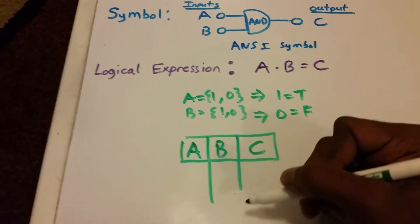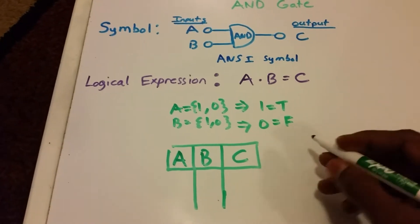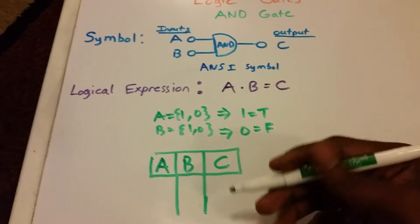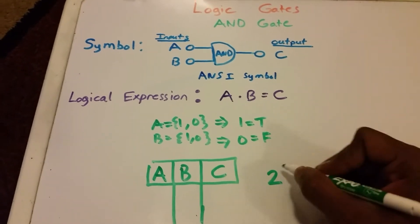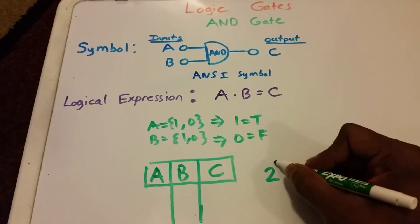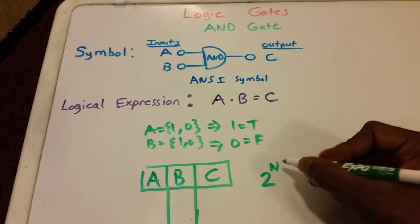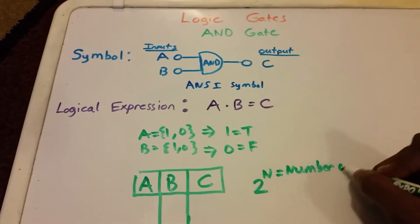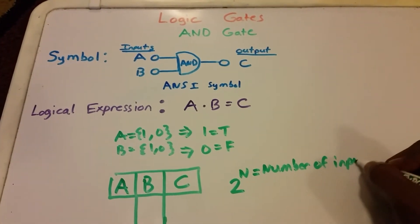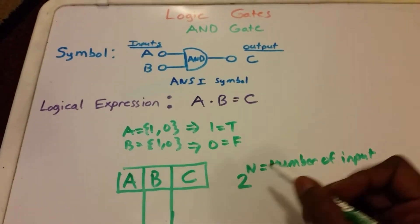I want to know how many rows do I need. Well, to calculate this, the number of rows is 2 to the power of the number of inputs. So n equals the number of inputs. In this case, we have two inputs, A and B.